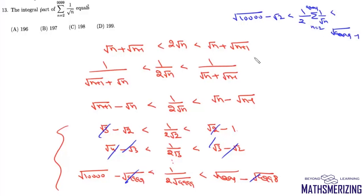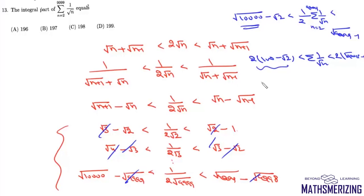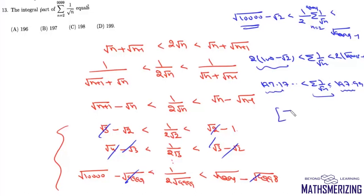Multiplying by 2: 2√10000 − 2√2 = 200 − 2√2 ≈ 197.17 is less than the summation, and the summation is less than 2√9999 − 2 ≈ 197.99. So this value lies between 197.17 and 197.99, and the greatest integer function of the summation Σ(1/√n) is 197. That's option B.